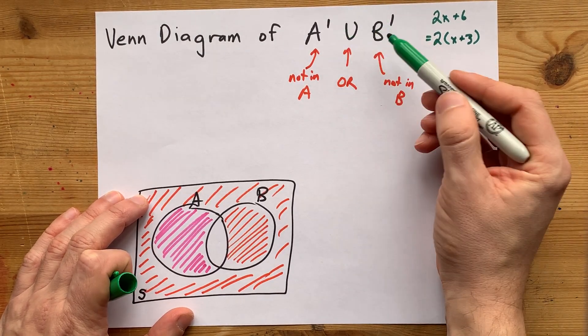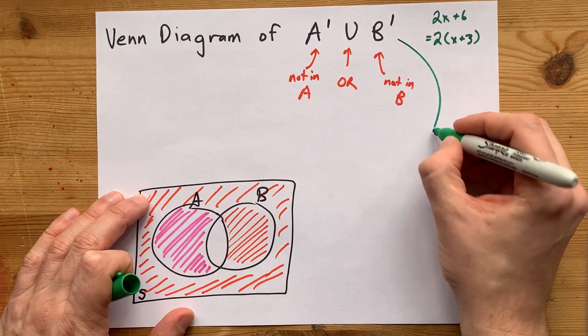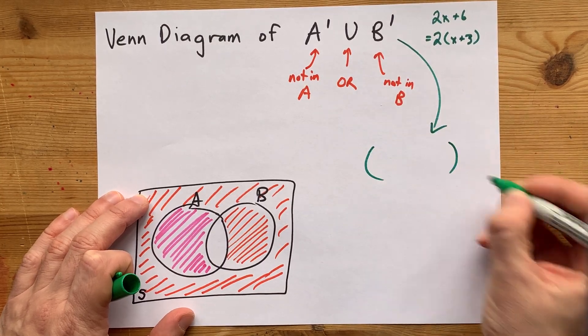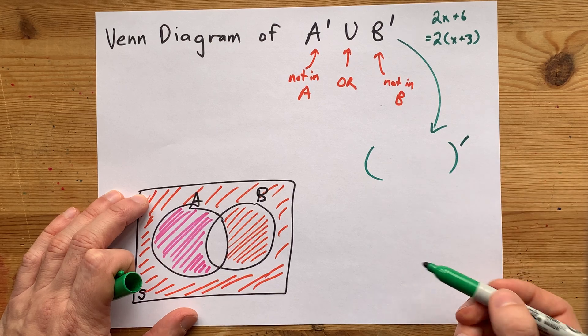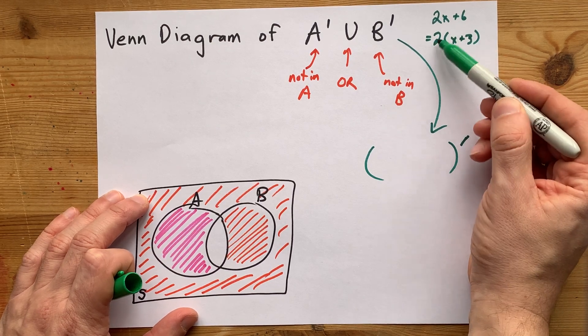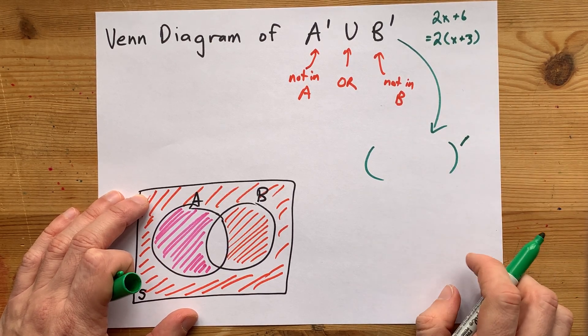you're going to be able to factor out the complement here as well. Now, I'm going to put the leftovers in brackets and put the complement on the outside, just like I pulled the 2 out and put it on the outside of brackets in algebra.